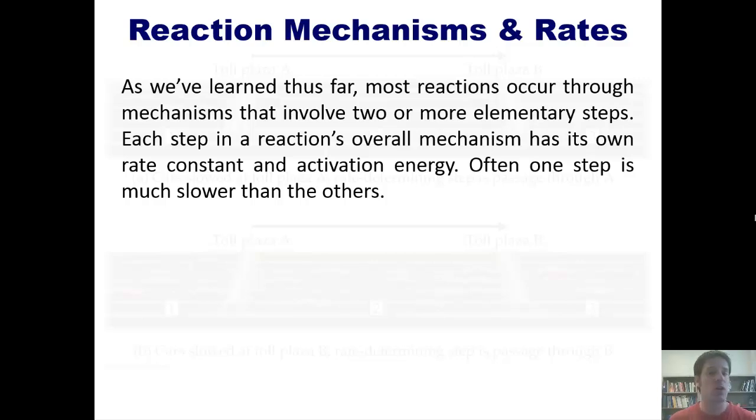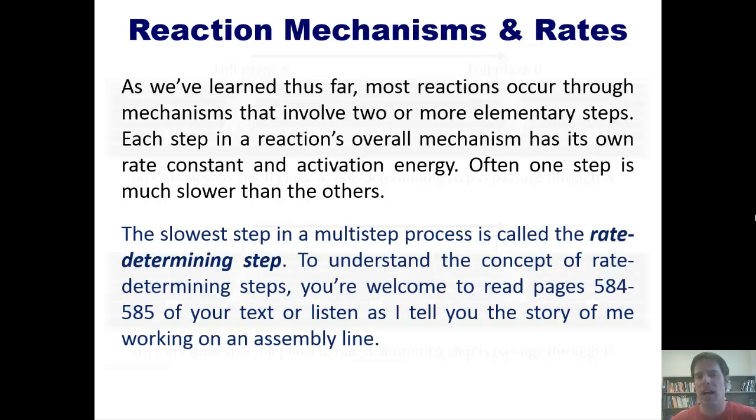As we've learned thus far, most reactions occur through mechanisms that involve two or more elementary steps. Each of these steps in a reaction's overall mechanism has its own rate constant and its own activation energy. Oftentimes, one of those steps is much slower than the others. The slowest step in a multi-step process is called the process's rate-determining step. To understand the concept of rate-determining steps, you're welcome to read these pages from our text, or listen as I tell you the story of me working on an assembly line.